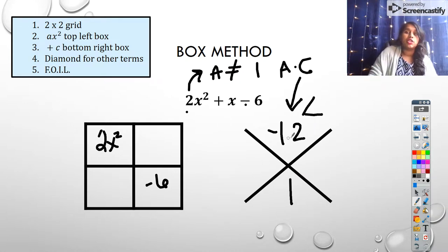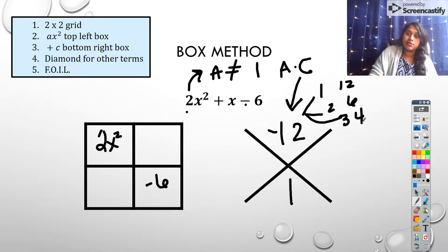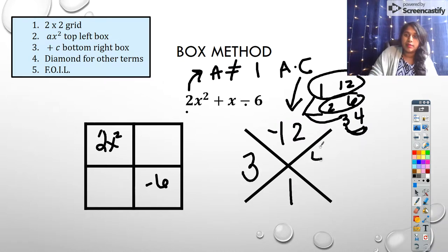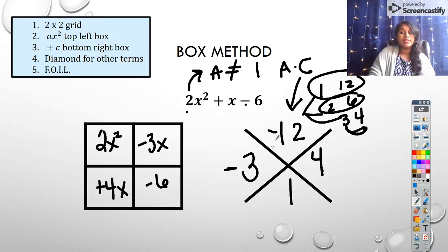What factors of 12 would get me to 1? So we're looking at 1 and 12, 2 and 6, and 3 and 4. Okay, well, 2 and 6 will never combine to 1. 1 and 12 won't combine to 1, but 3 and 4 would, and this is negative, this is positive. So that means I'm going to put my 3 here, I'm going to put my 4 here. If I make this negative, then this would be negative. That's not what I want, so I'm going to make this one negative. So that becomes minus 3x plus 4x minus 6.